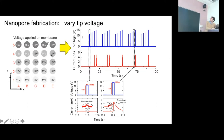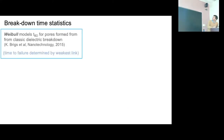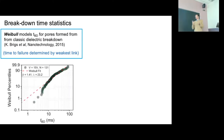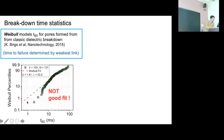We did a more detailed analysis of the statistics of the breakdown time. For classic dielectric breakdown, the distribution of breakdown time should satisfy a Weibull distribution — a type of extreme value distribution often used to model failure statistics in semiconductors. We plotted the cumulative distribution of our data: if it fit a Weibull, it would be linear. However, our data is not linear, so our breakdown distribution is not a good fit to the classic Weibull.